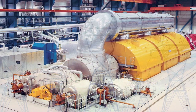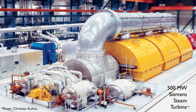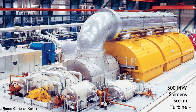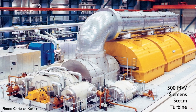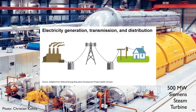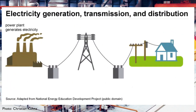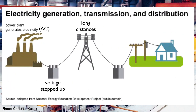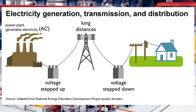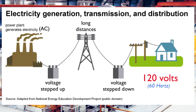That's why alternating current is the choice of power plants that deliver electrical energy to homes and other consumers. In North America, the standard voltage is 120 volts at a frequency of 60 hertz.